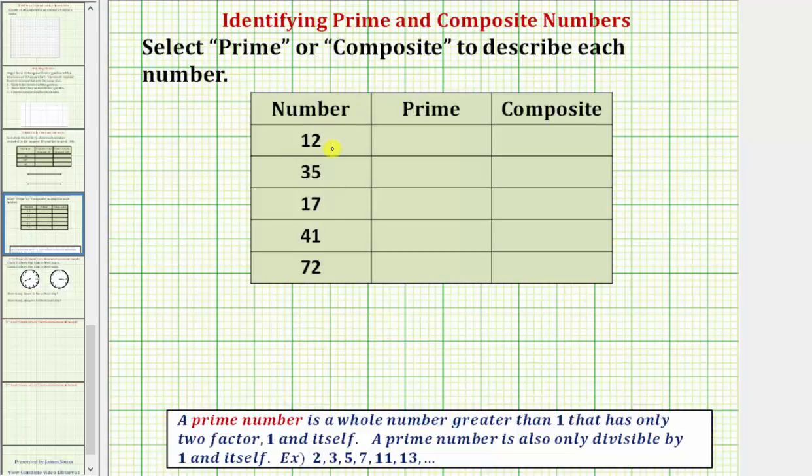So looking at the first number here we have twelve. We know one times twelve is equal to twelve, but if we can find another product involving different whole numbers that equals twelve, this will tell us that twelve is composite and not prime. Notice how twelve is even, it ends in a two. All even numbers except two will be composite numbers.